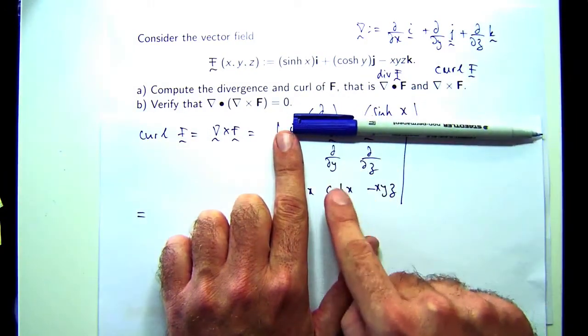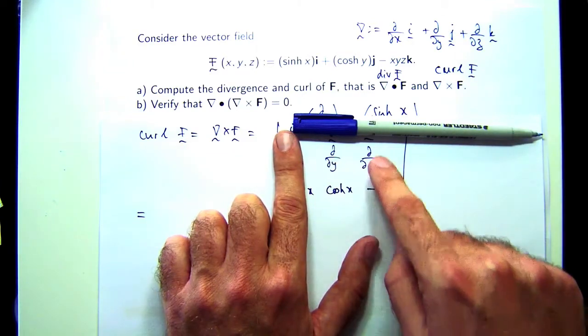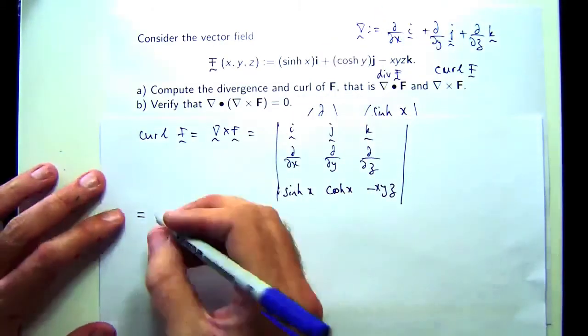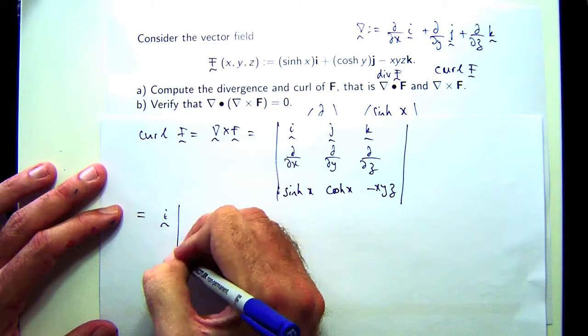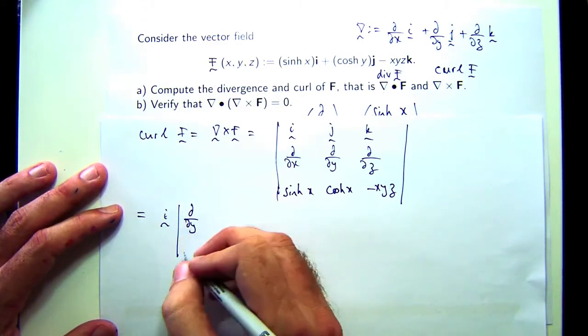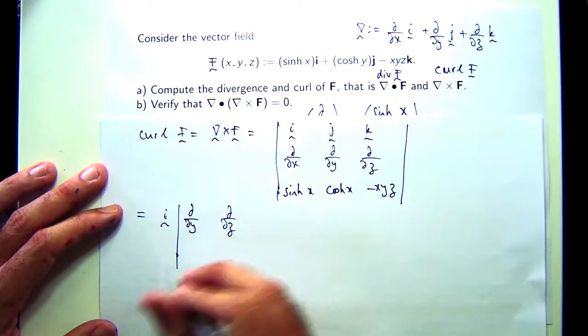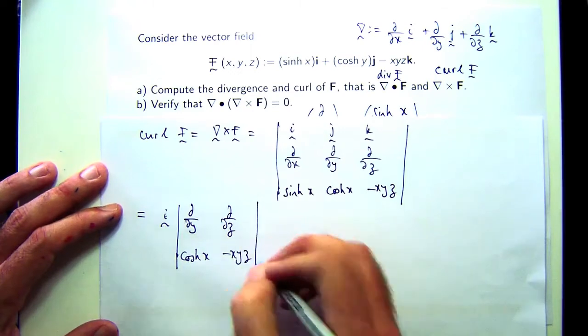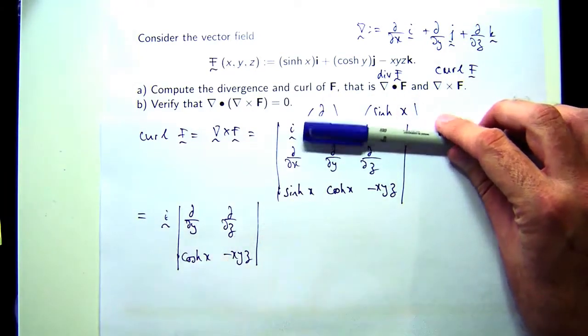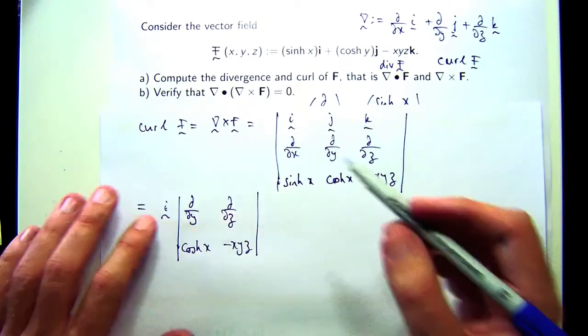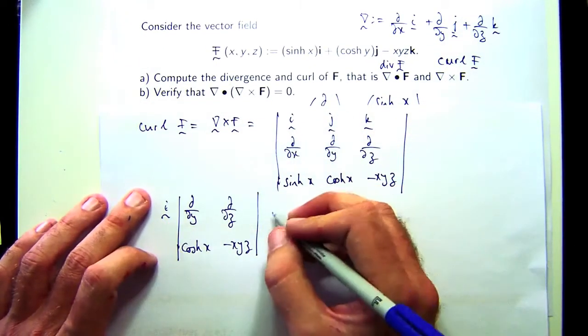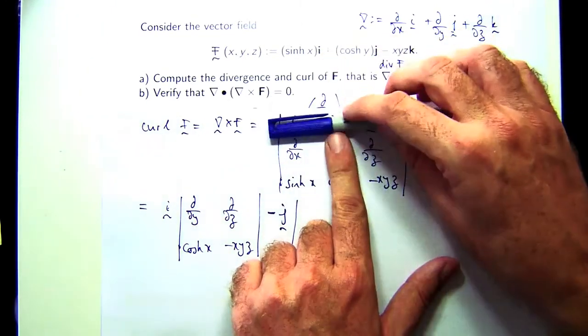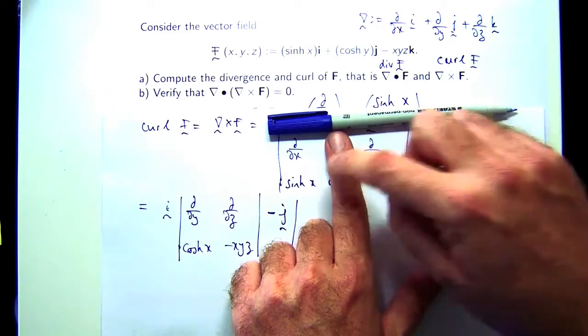Let's start with i. The determinant of what's left - we're not multiplying here, these things are acting on these functions. So it's ddy of that minus ddz of that. I'll write it out just so we're all clear. Move on to the j. When you go from letter to letter, you change the sign. So ddx of that minus ddz of that.